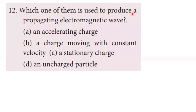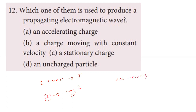Twelfth question: which of the following is used to produce a propagating electromagnetic wave? A charge at rest only produces an electric field. Electromagnetic waves are produced by accelerating charges. So the first option is the correct answer for the twelfth question.